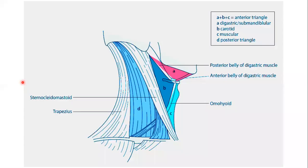Previously we have done the posterior triangle, which we call the lateral cervical region. It was also subdivided into various parts. The main muscles responsible for making these triangles are trapezius and sternocleidomastoid. As we come to the anterior triangle of the neck, also called the anterior cervical region, the anterior median line is the anterior boundary and posteriorly the line is the sternocleidomastoid.